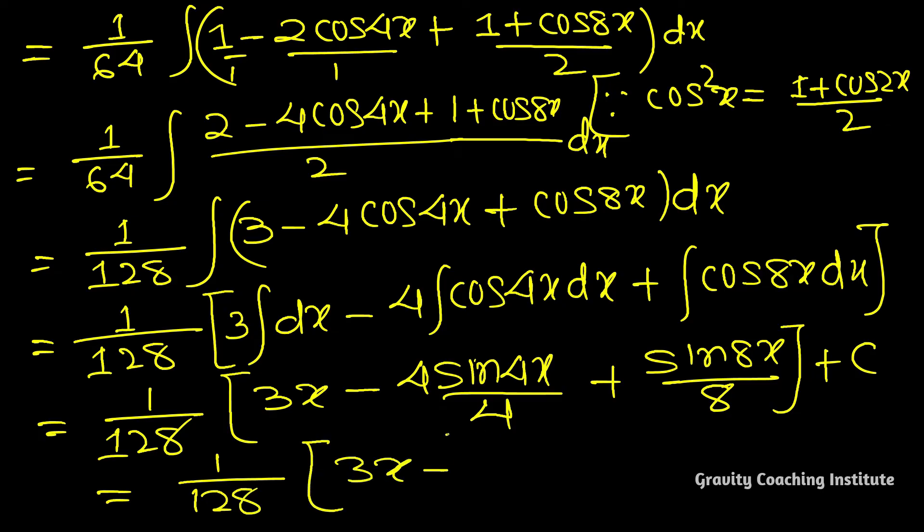Equals 1 by 128, 3x minus sin 4x, this 4 cancels, plus sin 8x by 8 plus c. This is the answer.